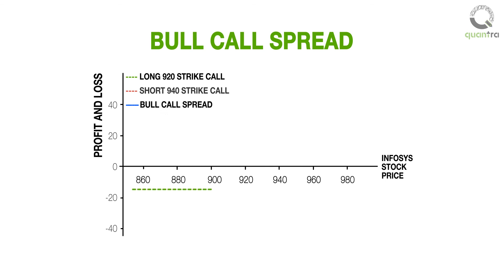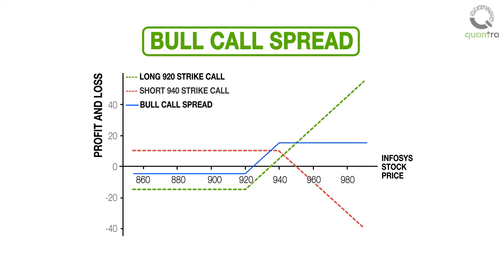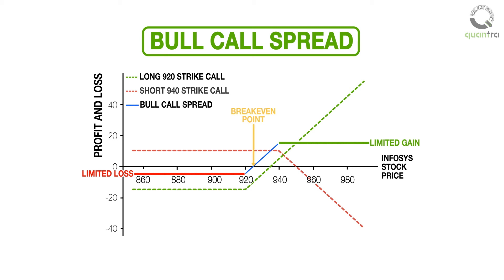A combination of the payoffs of the long call with strike price 920, and the short call with strike price 940, is the payoff of a bull call spread, shown in blue. In summary, a bull call spread is a limited gain and a limited loss strategy. The choice of strike price is a matter of balancing risk-reward and the probability of price crossing the breakeven point.